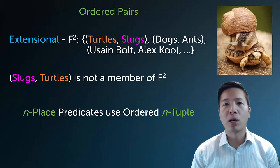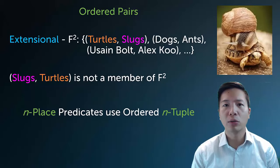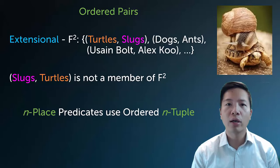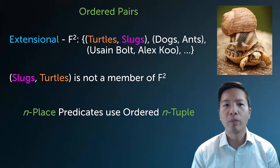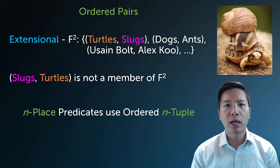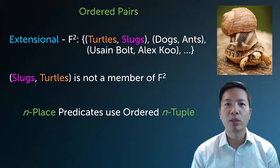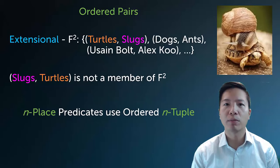So here I have: turtles comma slugs, dogs, ants, Usain Bolt, Alex Koo — and this is expressing that all the things in the left slot are faster than the right slot. Now of course order matters, so be careful. If turtle-slugs is indeed true, if turtles are actually faster than slugs, then you can't put slugs-turtle in because the order of the pairing matters.